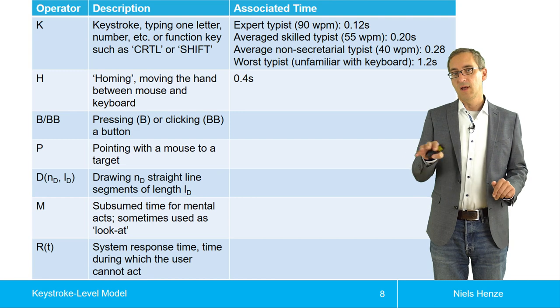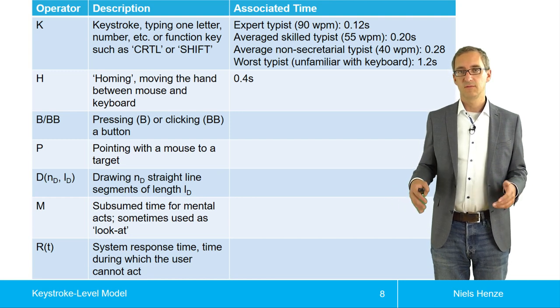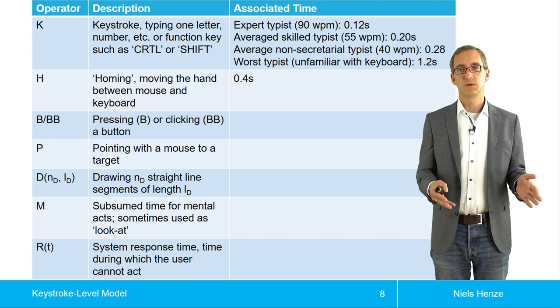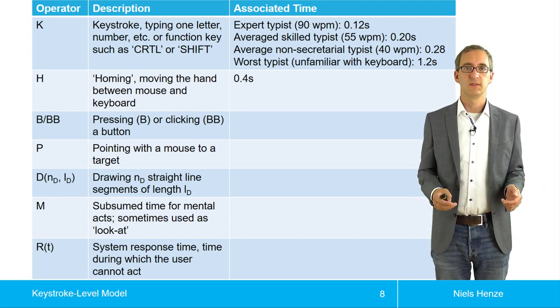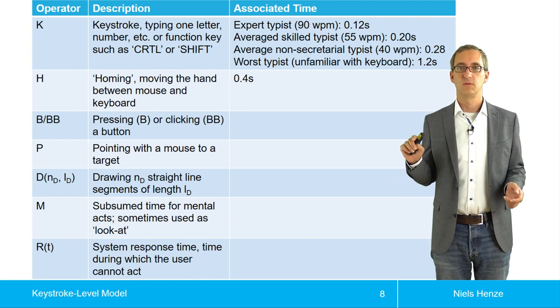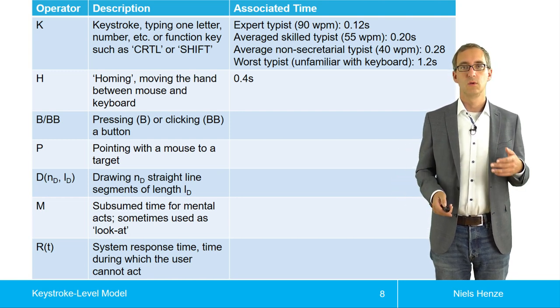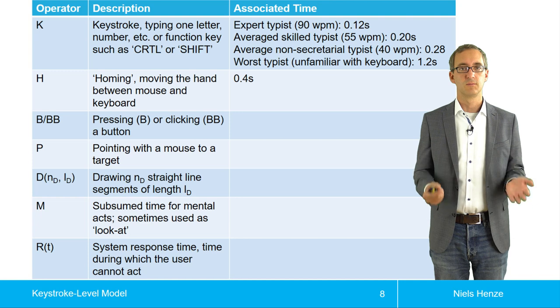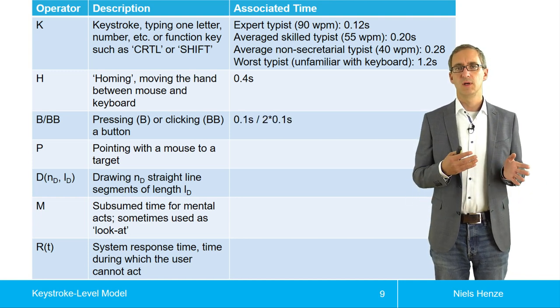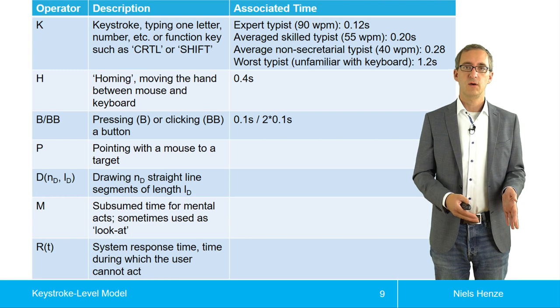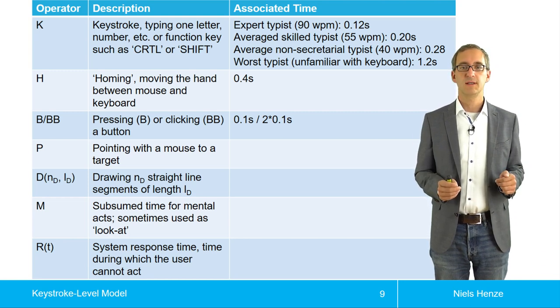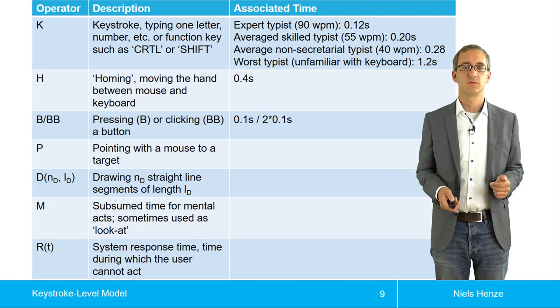The next thing is if we have the hand on the mouse, we want to click on buttons. This is decomposed into simpler operations: pressing the mouse button down and releasing the mouse button again. Each of these is considered a B. So pressing the mouse button down or releasing it takes 100 milliseconds, and doing both takes 200 milliseconds.